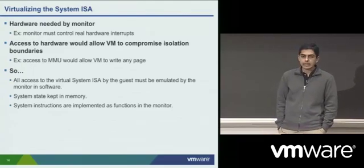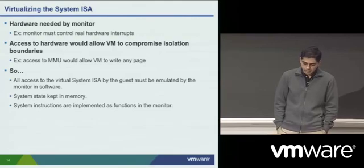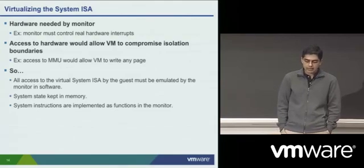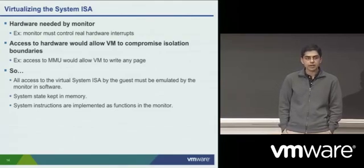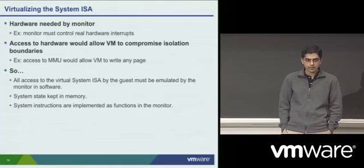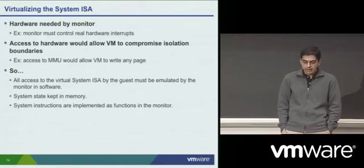As I showed you a couple of slides back, the system ISA primarily consists of the control registers, the memory management unit, the IO devices, and so on.